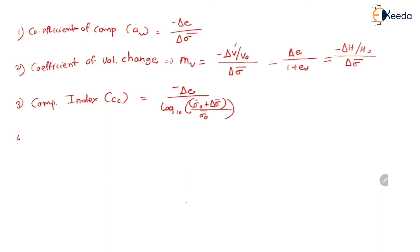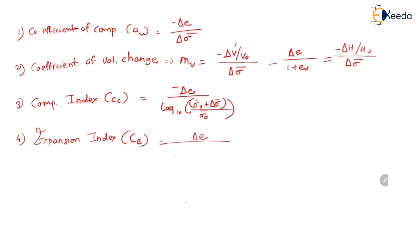The next definition is the expansion index, denoted as CE. The formula is the same as the compression index, the only difference being that the minus sign is eliminated. So CE equals delta E divided by log base 10 of (sigma 0 bar plus delta sigma bar) divided by sigma 0 bar.